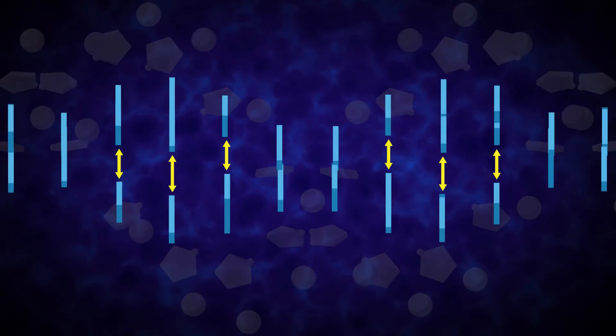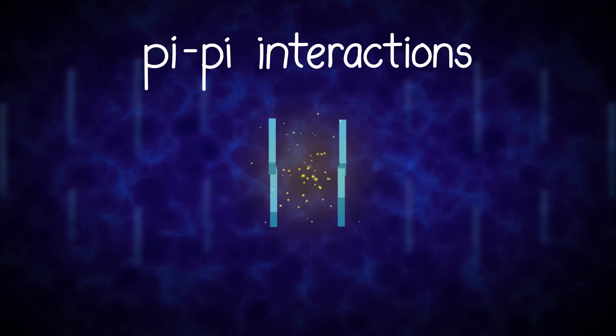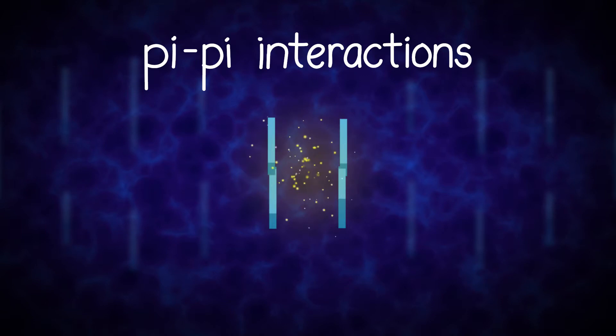In addition to the hydrogen bonding between the bases, the stacking of the bases also stabilizes the double helix structure. These pi-pi interactions form when the aromatic rings of the bases stack next to each other and share electron probabilities.